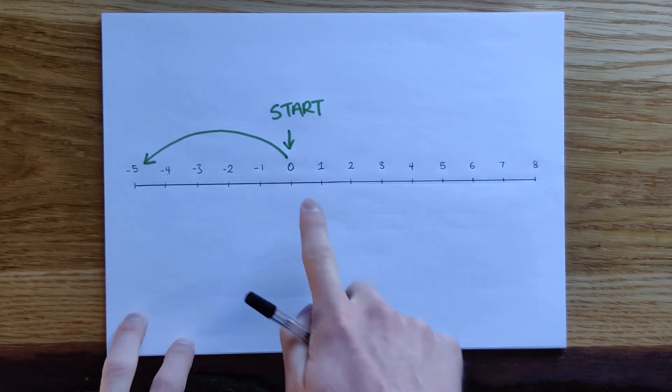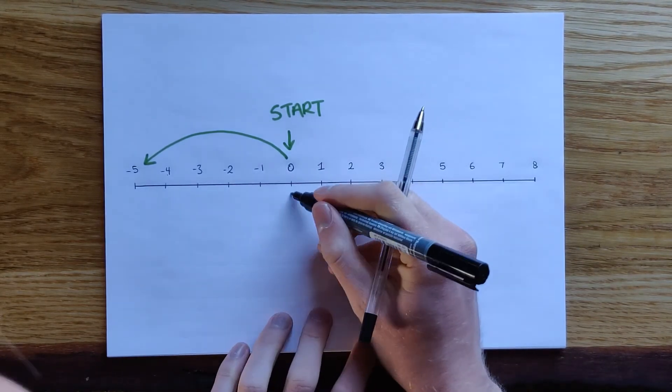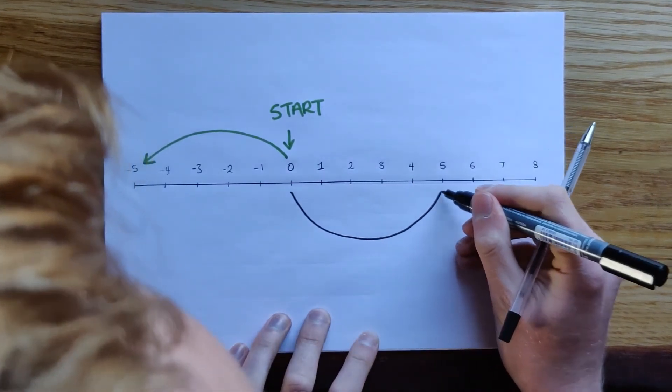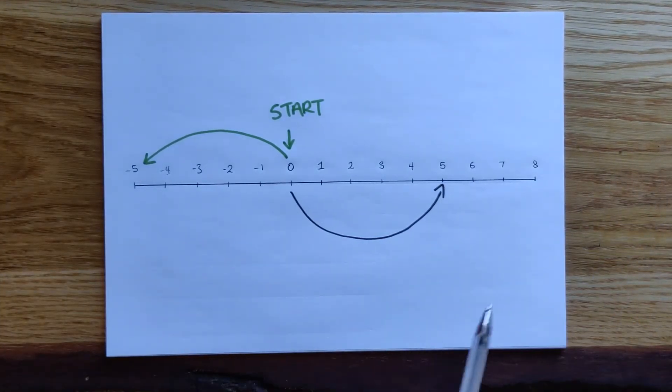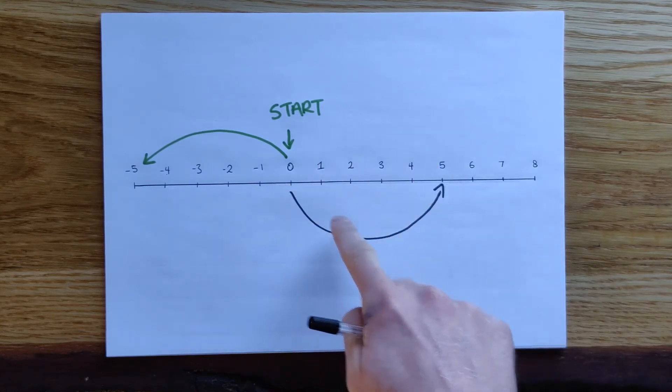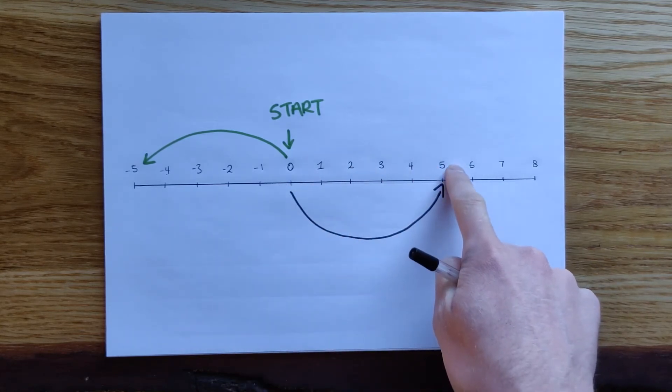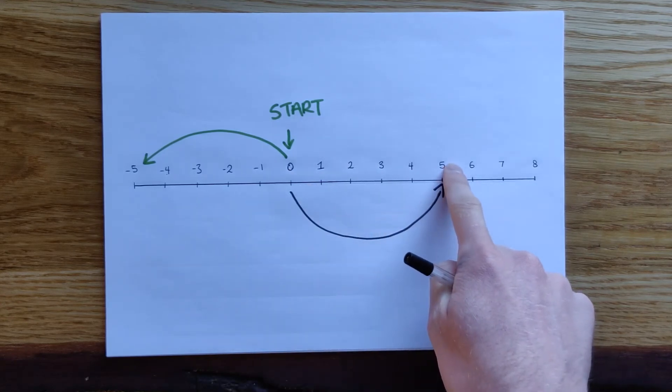But if you started with zero and you were given five pounds, it would go the other way. You would end up with having positive five pounds because you've got five new pounds in your pocket. So if you were given five pounds, you would gain five.